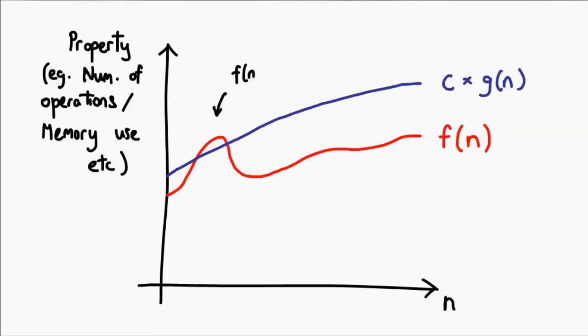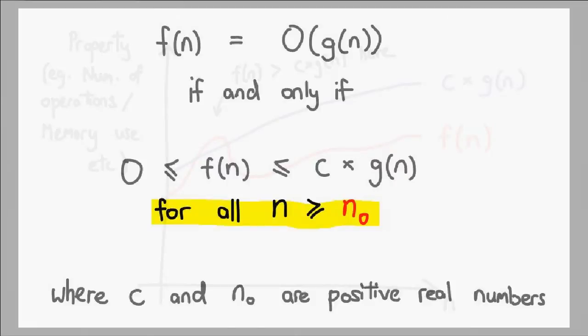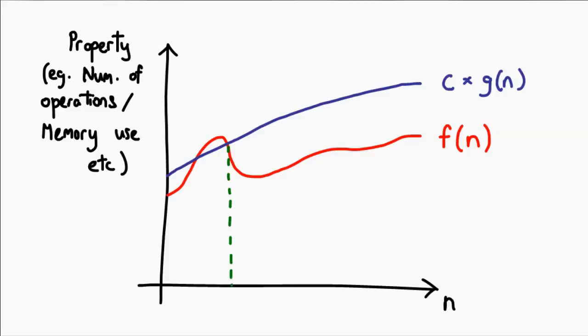Now it doesn't have to be larger all the way. As you can see at this point, f(n) is actually larger than c*g(n). The reason why we're allowed to do this is because of this last part in the definition. This whole thing only needs to be true starting from a particular value of n. And what this means is we can say that n0 is right here, and basically c*g(n) only needs to be larger than f(n) starting from this point.